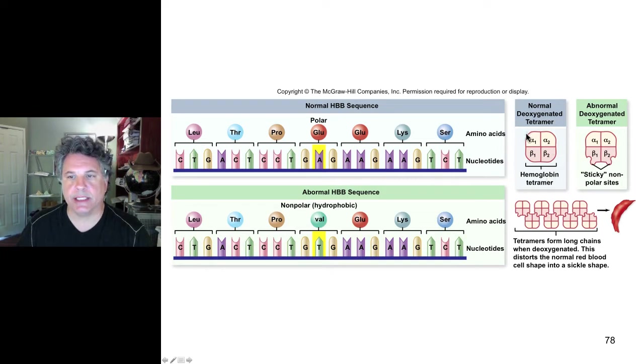Now hemoglobin is a tetramer of four protein subunits, so there are four monomers in this tetramer. There are two alpha subunits and two beta subunits per hemoglobin molecule, and each of these is capable of carrying an oxygen around in red blood cells. So hemoglobin is responsible for oxygen transport in human blood.